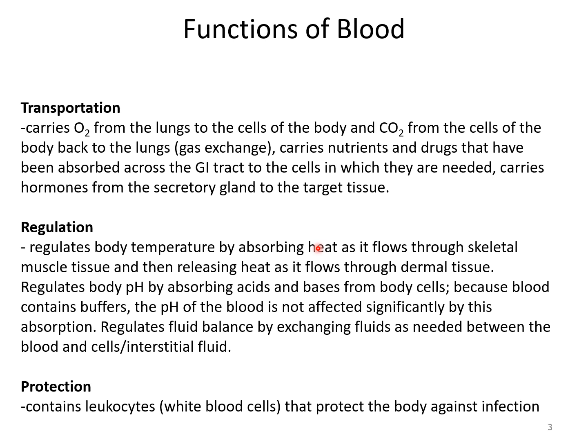Some functions of blood: Transportation — it carries oxygen from the lungs to the cells of the body and carries CO2 from the cells back to the lungs (gas exchange). It also carries nutrients and drugs absorbed across the GI tract — when you eat a meal and digest it into its smallest parts, those molecules get absorbed into the bloodstream and transported to cells that need them. It carries hormones from secretory glands to target tissues, as we saw in the endocrine system. Regulation — blood regulates body temperature by absorbing heat as it flows through skeletal muscle tissue and releasing that heat as it flows through the dermal tissue.